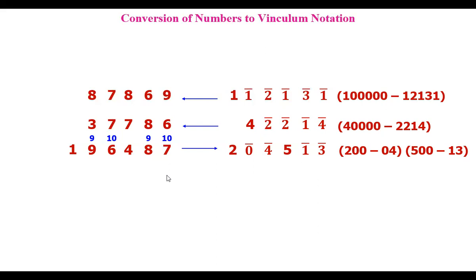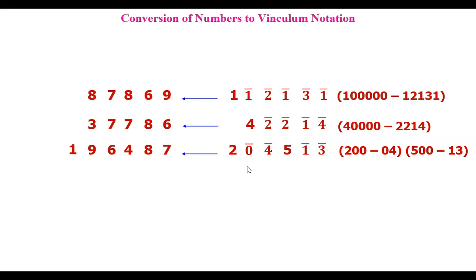Converting back to decimal: for each set, the last is 10, others are 9; positive numbers come as they are. 10 minus 3 is 7; 9 minus 1 is 8; and 5 minus 1 is 4. Then 10 minus 4 is 6; 9 minus 0 is 9; and 2 minus 1 is 1. That's how you get the decimal numbers back.